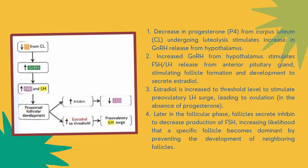Lastly, later in the follicular phase, follicles secrete inhibin to decrease production of FSH, increasing the likelihood that a specific follicle becomes dominant by preventing the development of neighboring follicles.